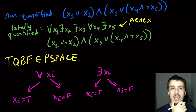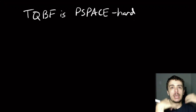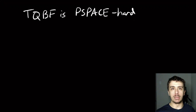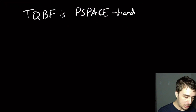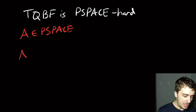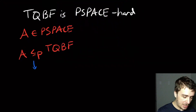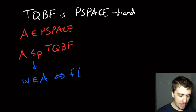We're going to show that TQBF is PSPACE-complete. To show PSPACE-hardness, we need to take any problem that runs in polynomial space and do a polynomial reduction to TQBF such that the formula we make is satisfiable if and only if the input is in the original language. So let's say language A is in PSPACE; we want to show A poly-reduces to TQBF, meaning w ∈ A if and only if f(w) ∈ TQBF.